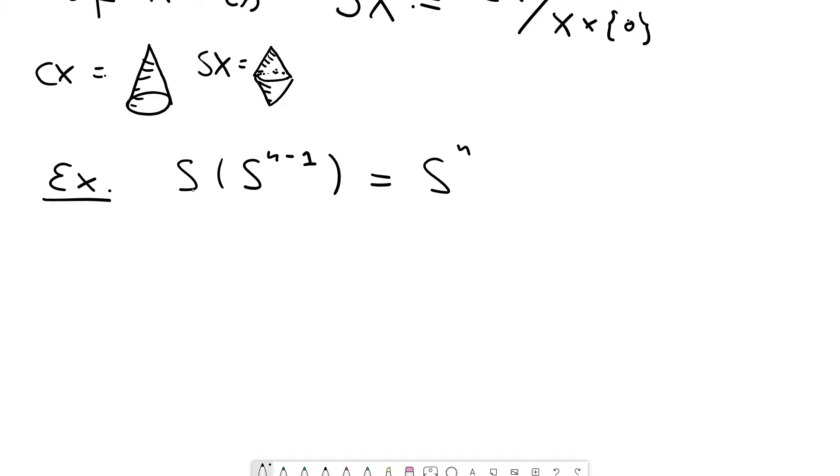Of course, this S is for a sphere. This S is for suspension, but that's a lucky coincidence. Yeah. So if you multiply S to the n minus 1 by another S, you get S to the n. So this is how you can remember this.